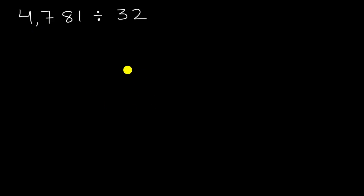So first let me rewrite 4,781 and this is going to be divided by 32. Now, whenever we divide by anything that has more than one digit, it's a little bit of an art. The way we're going to tackle it is a little trial and error using estimation.